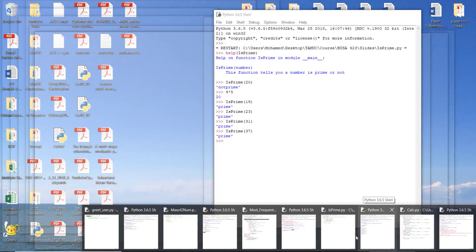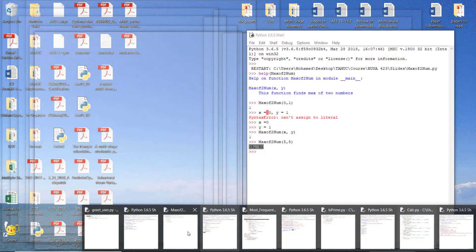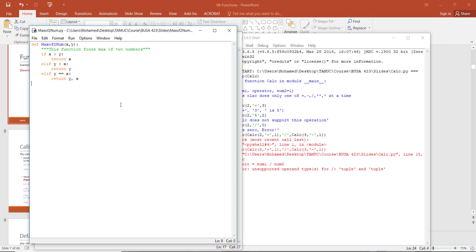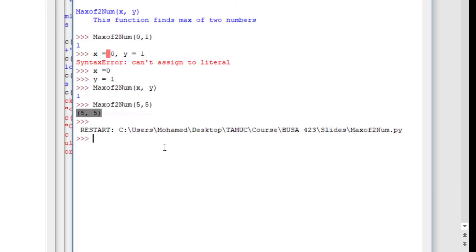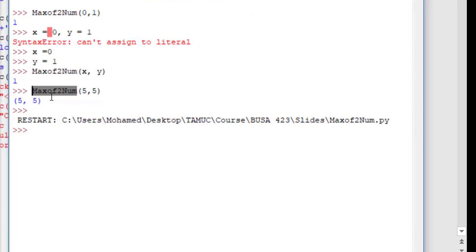Sometimes we can call a function inside of a function. Let's have one more example of this. Let's get back to the max of two numbers function. I put two and instead of giving one more number, I use another call of the function.